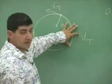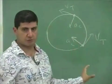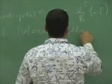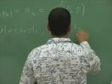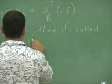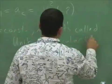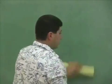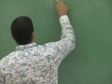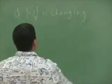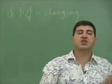If the magnitude of the velocity is constant, it's called uniform circular motion. If the magnitude of velocity is changing, then there is a tangential acceleration in addition to the centripetal acceleration.